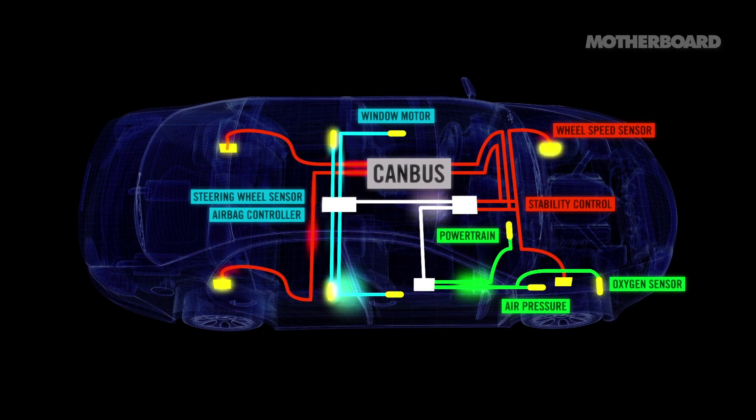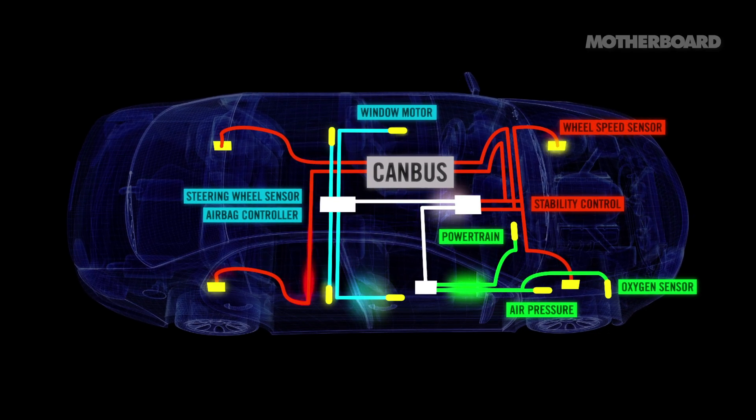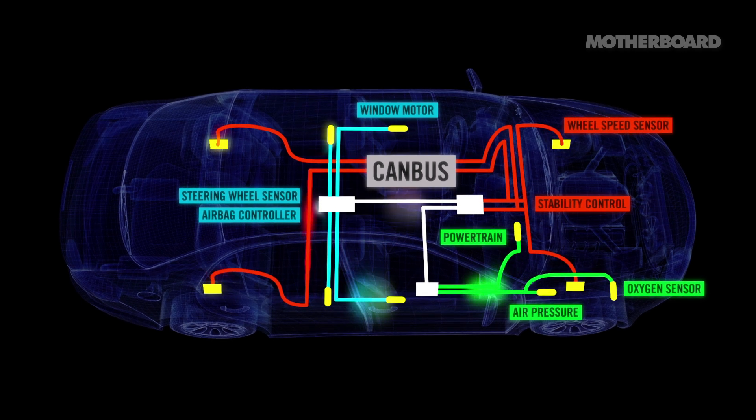The CAN network, or CAN bus, is a network within the car that allows all the pieces to communicate. Everything can read and write to the CAN bus, and pretty much everything is always listening for commands from the CAN bus.